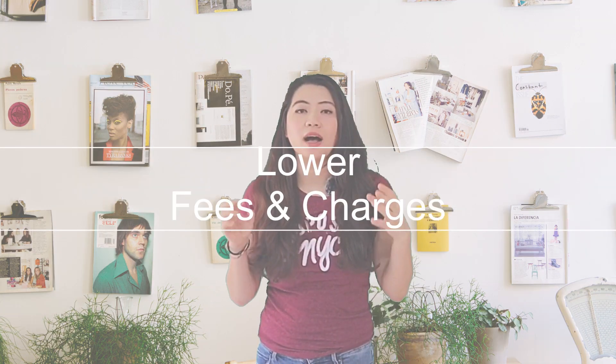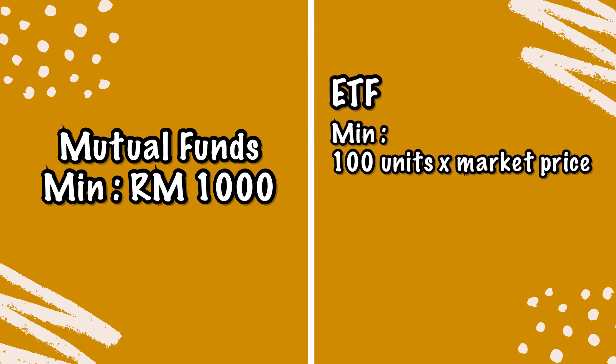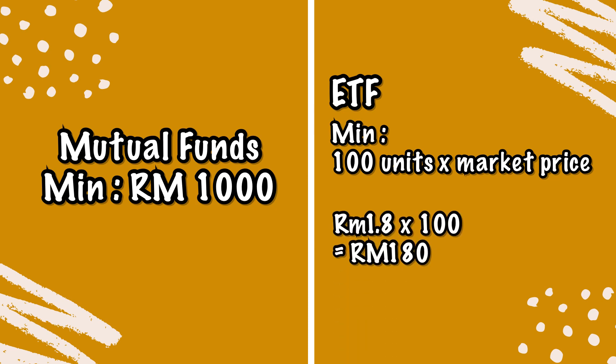What are the advantages of an ETF? Number one: the overall fees and charges are lower compared to mutual funds, and on top of that, the initial minimum investment is also cheaper. For example, mutual funds need a minimum investment of RM1,000. Whereas for ETF, the minimum investment is 100 units times the market price. So if the ETF costs RM1.80 per unit, buying 100 units will only cost you RM180.